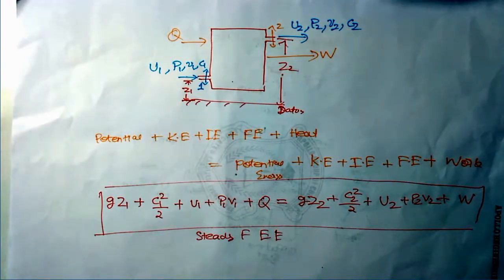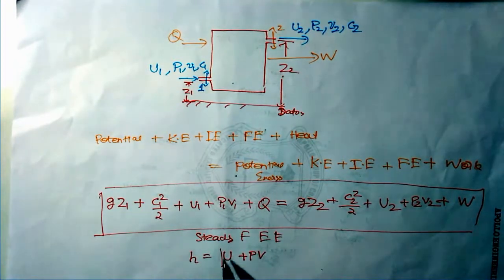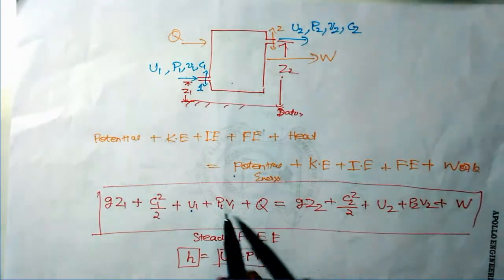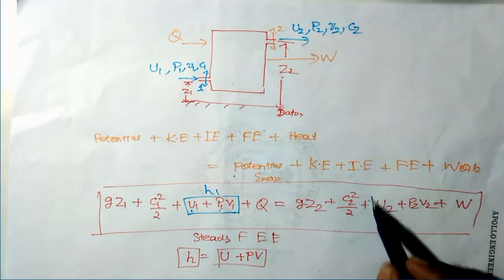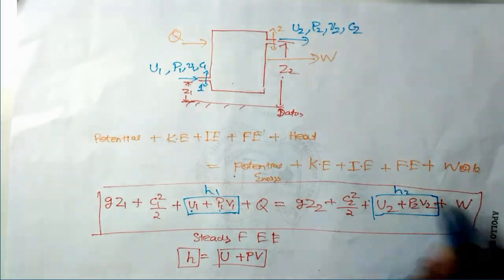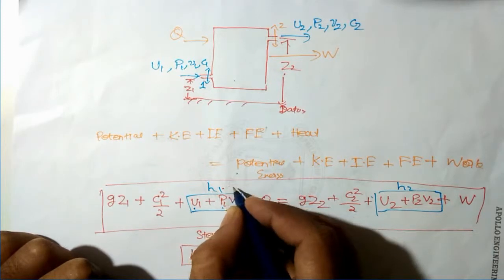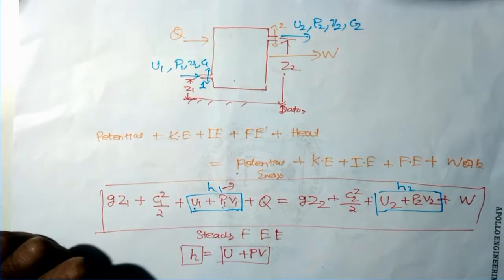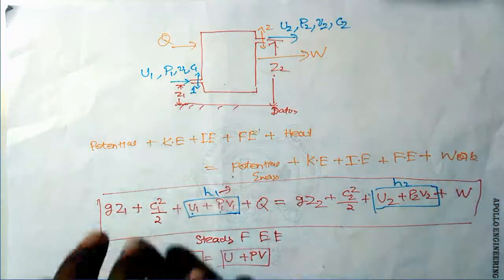We already know that enthalpy is equal to internal energy plus pressure-volume work. In this equation, internal energy and flow energy together are replaced by enthalpy H1 at inlet and H2 at outlet. Since specific enthalpy is a thermodynamic property, it can be easily found using various methods. This gives us the final steady flow energy equation.